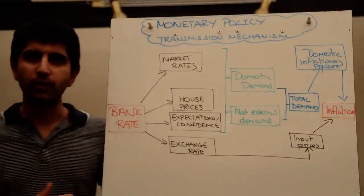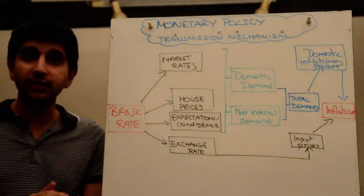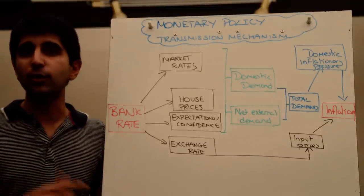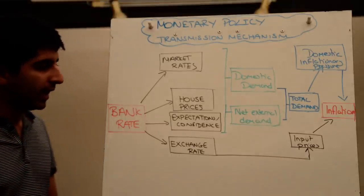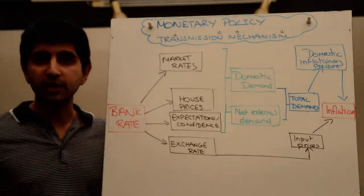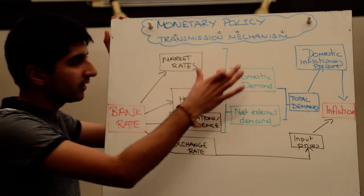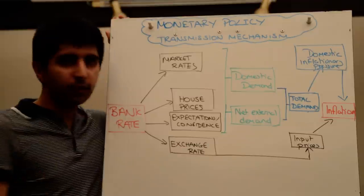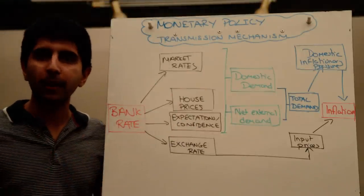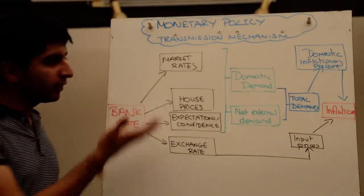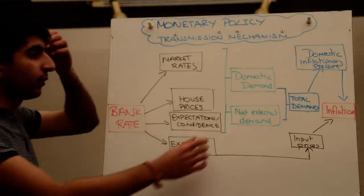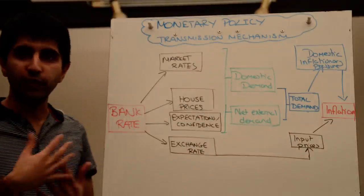The bank rate can also affect the exchange rate. If interest rates are cut by the Monetary Policy Committee, this can well depreciate the exchange rate as foreign investors move their money away from the UK, seeking more lucrative investments rather than holding money in UK bank accounts with now lower relative interest rates. If these people move that money away, it puts downward pressure on the exchange rate — increasing the supply of the pound and leading to a depreciation. So market rates and exchange rate effects influence both domestic demand and net external demand, including demand for UK pounds and UK assets.